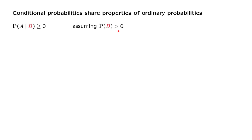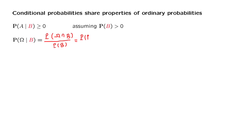How about another axiom? What is the probability of the entire sample space given the event B? By definition, the conditional probability is the probability of the intersection of the two events involved divided by the probability of the conditioning event. The intersection of omega with B is just B itself, so the numerator becomes the probability of B. We're dividing by the probability of B, so the answer is equal to 1. The sample space has unit probability even under the conditional model.